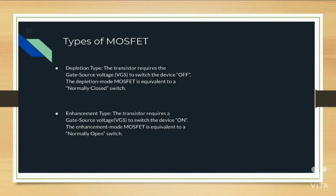In depletion type, the transistor requires the gate-source voltage VGS to switch the device off. The depletion mode MOSFET is equivalent to a normally closed switch. In enhancement type, the transistor requires a gate-source voltage VGS to switch the device on. The enhancement mode MOSFET is equivalent to a normally open switch.